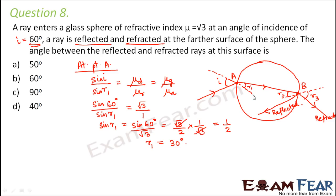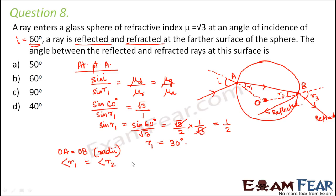Observing the figure, O is the center of the sphere, so OA and OB are both radii and therefore equal. In triangle OAB, since OA = OB, the triangle is isosceles, so angle R1 equals angle R2. Since R1 = 30°, R2 = 30° as well.